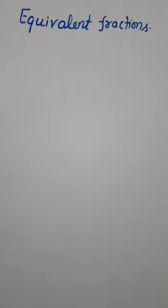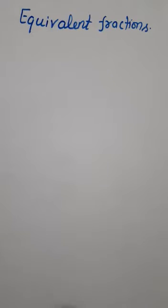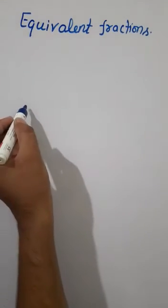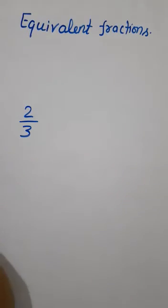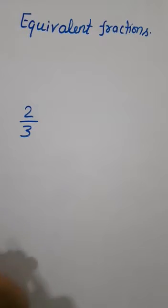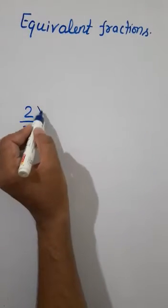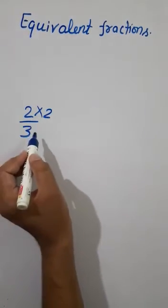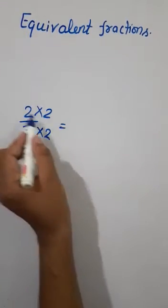As we studied earlier, an equivalent fraction of a given fraction can be obtained by multiplying or dividing its numerator and denominator by the same nonzero number. Let us understand this with an example. Suppose a fraction is given as 2/3 and you are required to find one equivalent fraction. We will simply multiply the numerator by 2 and the denominator by 2.